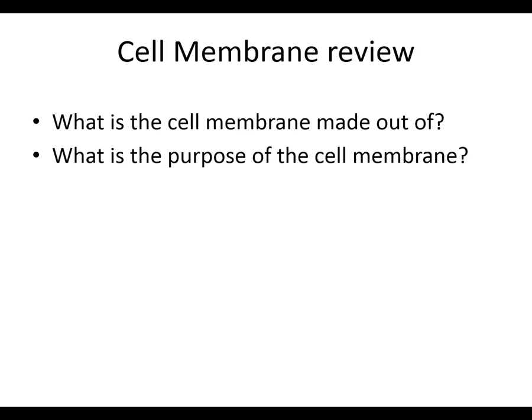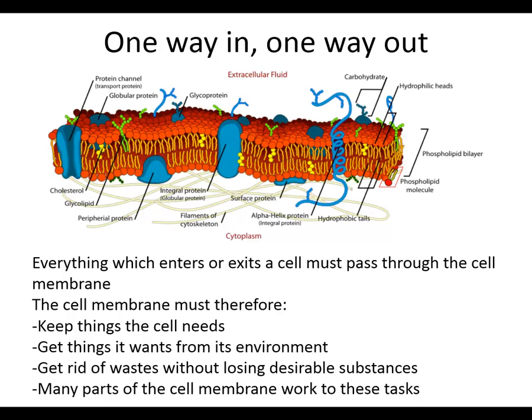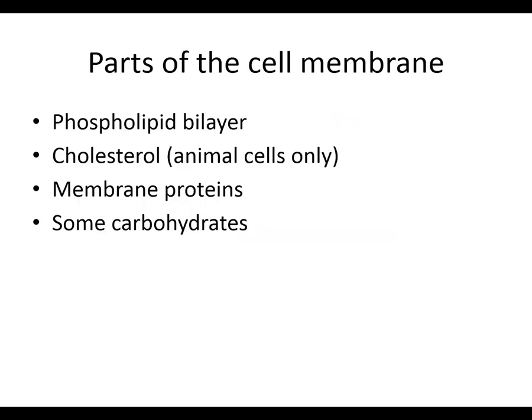What is it made out of? Phospholipid bilayer — that's the primary part. Anything else? Proteins. The proteins are doing most of the stuff that we want to get done. The cell has to keep what it wants and get what it wants. We have a phospholipid bilayer, membrane proteins, cholesterol if we have an animal cell — prokaryotic cells don't have those — and there are some carbohydrates.